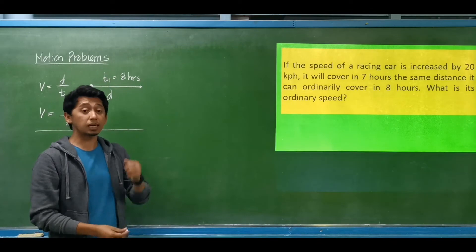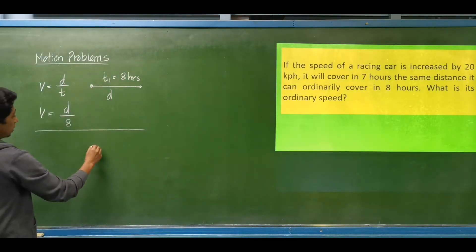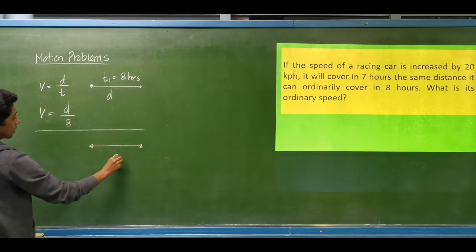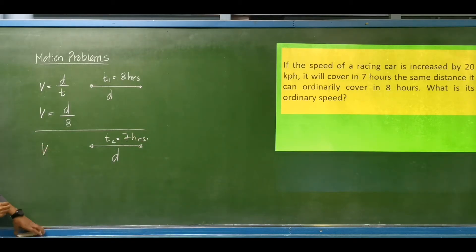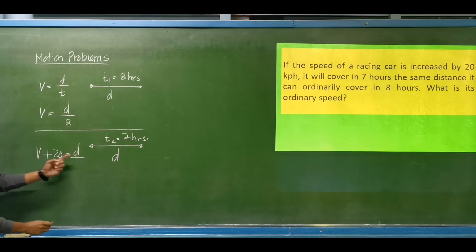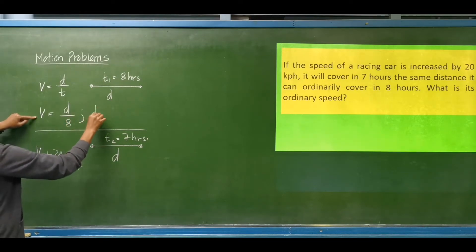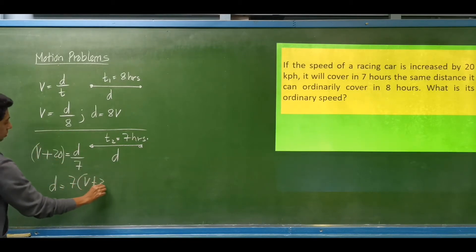From the first statement: if the speed is increased by 20 kilometers per hour, the same distance will now be covered in only 7 hours. So the velocity is increased by 20 kilometers per hour. From the first situation, the distance is 8 times the velocity. For the increased speed case, the distance equals 7 multiplied by the quantity velocity plus 20.